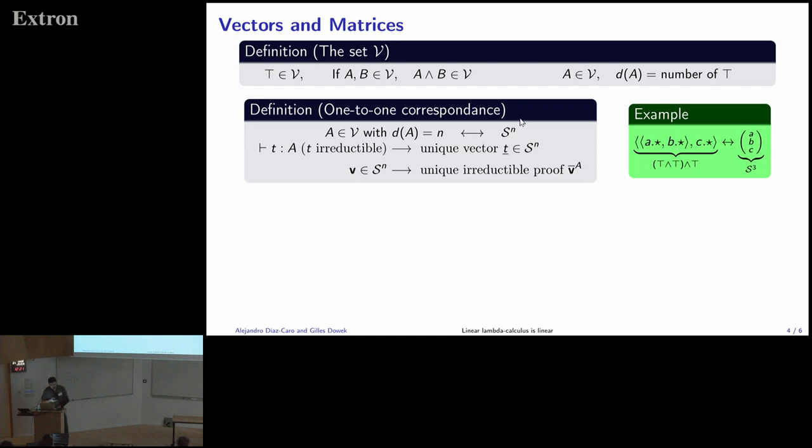With this, we have a one-to-one correspondence between a type in this V and the vector space S to the N. And the correspondence is, just say that if you have a term, an irreducible term of type A, then there is a unique vector in S to the N. And if you have a vector in S to the N, then there is a unique irreducible proof of this vector in this type. And here we have to put the type because the bracketing gives you different terms, but both are similar. For example, this vector ABC, you're going to go in this way in the calculus. This is A, this is the pair of A times a star, B times a star, and then C times a star. So you have the correspondence between this type, which is in the set V, and S to the three, the vector space.